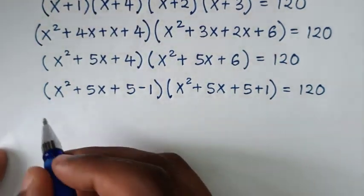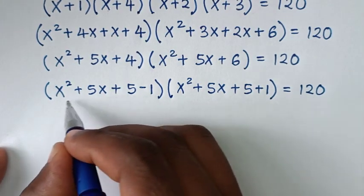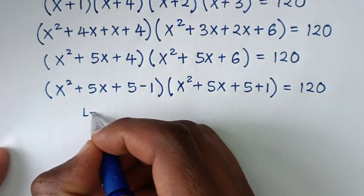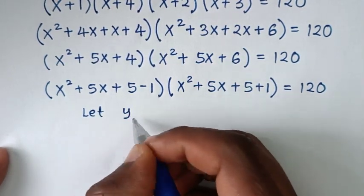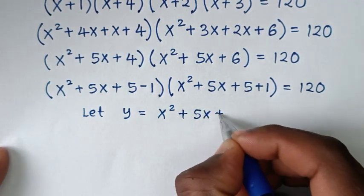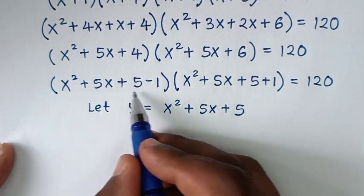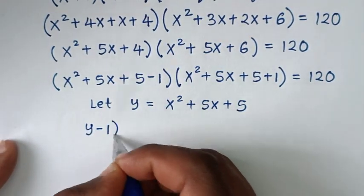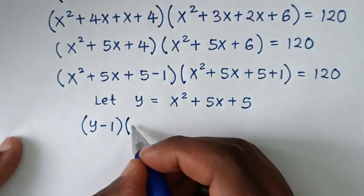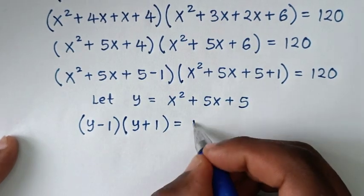Then in the next step, we can see x squared plus 5x plus 5 is common. So we let y equal to x squared plus 5x plus 5. Then our equation becomes (y minus 1) times (y plus 1) is equal to 120.